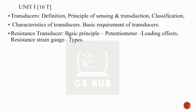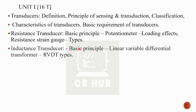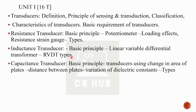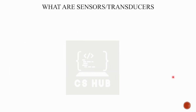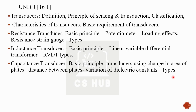Then Resistance Transducer — Basic Principle, then Potentiometer, Loading Effect, Resistance, Strain Gauge types. Inductance Transducer basic principle, Linear Variable Differential Transformer, RVDT types. Then Capacitance Transducer, basic principle, Transducers using Change in Area of Plates, Distance between Plates, Variation of Dielectric Constant, and Types. This is the first module.